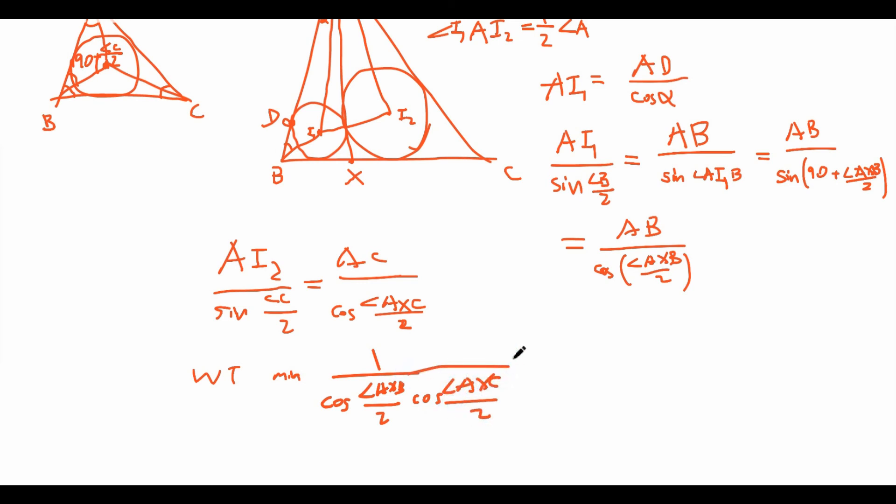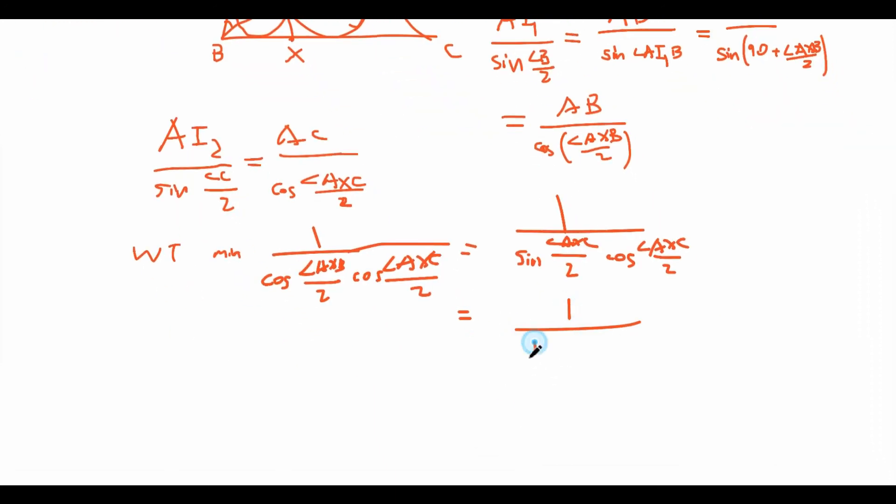And now the nice thing that we notice is that angle AXB plus angle AXC is equal to 180 degrees. So actually, 1 over cosine AXB over 2 times cosine of angle AXC over 2 since AXB over 2 and AXC over 2 sum to 90 degrees is just going to be equal to 1 over sine of angle AXC over 2 cosine of angle AXC over 2. And what does this equal? This just equals 1 over 1 half times sine of angle AXC over 2. And we want to minimize this. In other words, we want to maximize 1 half sine angle AXC. And we know that sine is maximized when it equals 1 and angle AXC equals 90.